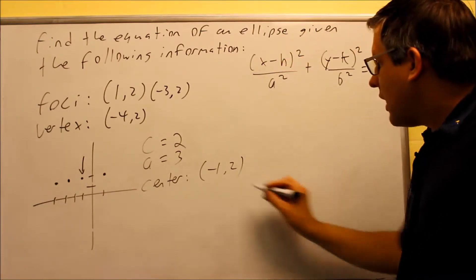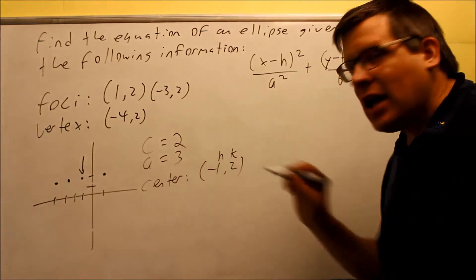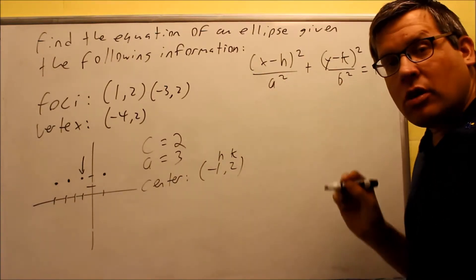And so I have h k. This is my h, this is my k, so I can plug that in. I have my a right away, so I know what a squared is. a squared would be 9.